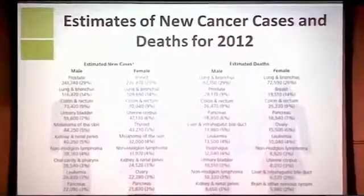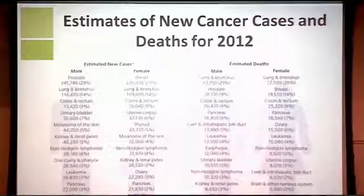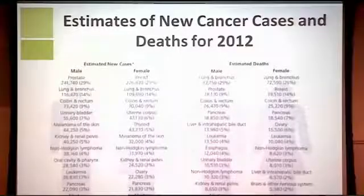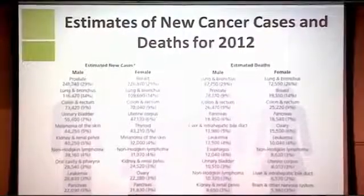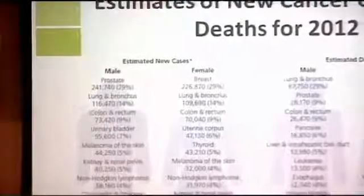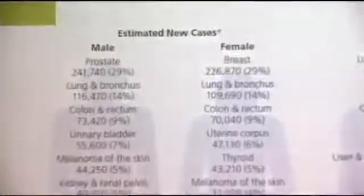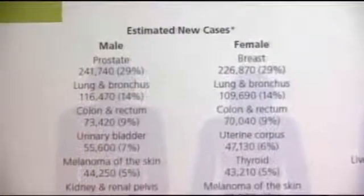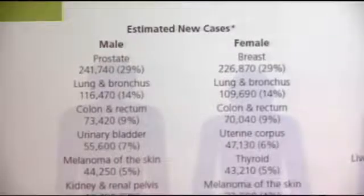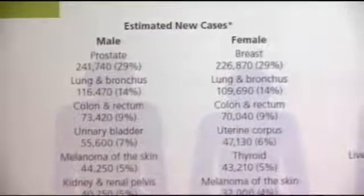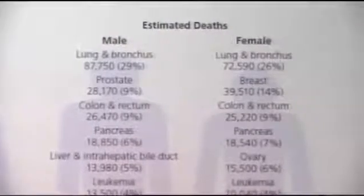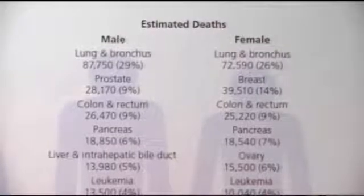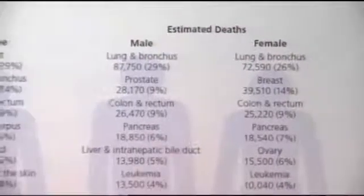From the book in your packet, this is the estimated number of new cases and deaths for the U.S. in 2012. How does the American Cancer Society come up with these numbers since 2012 is barely beginning? We look at a range of years in the past — probably 15 to 20 years — and extrapolate from those numbers to come up with an estimate of new cases among males and females and the estimated number of deaths in the U.S.